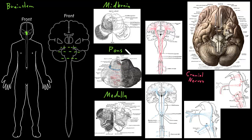The inside of the brainstem has some similarities to the spinal cord, particularly down low in the medulla where it's connecting to the spinal cord. Similarly to the spinal cord, most of the gray matter of the brainstem is on the inside, and most of the white matter is on the outside — but it's a lot more mixed together than in the spinal cord. Much of the brainstem gray matter consists of distributed neurons that aren't in nice discrete bundles, and we call this the reticular formation of the brainstem.